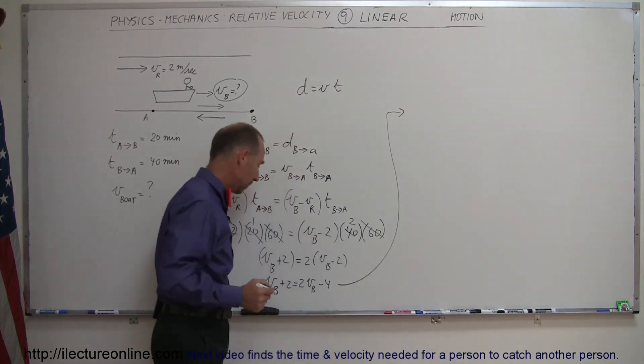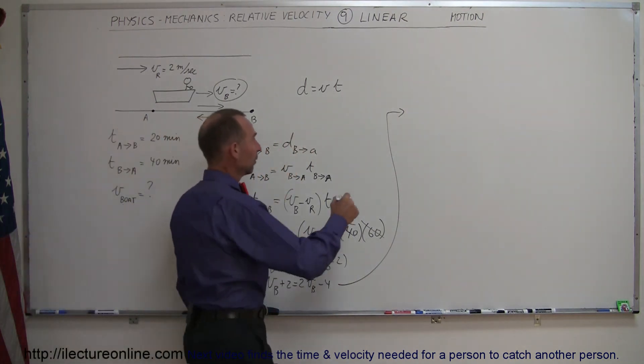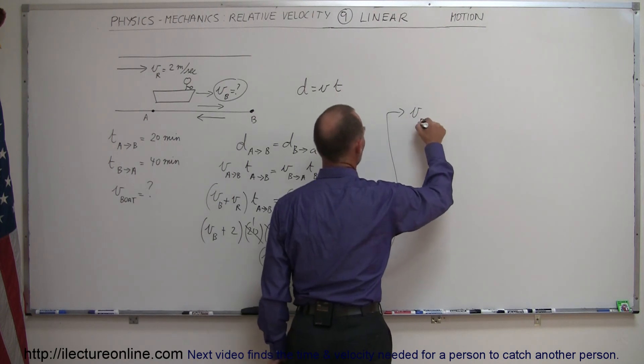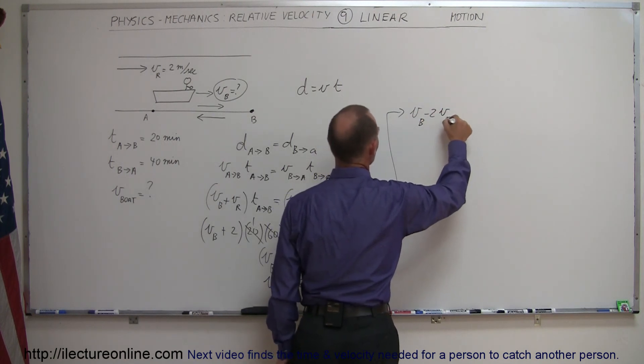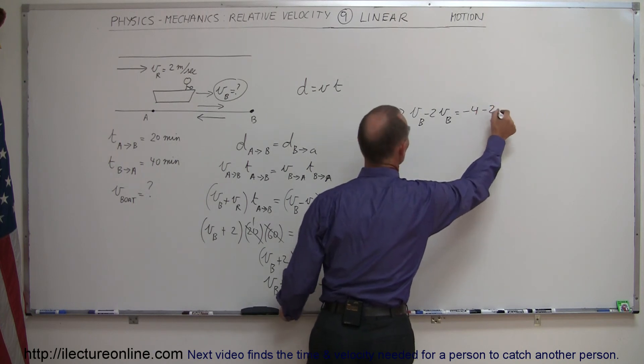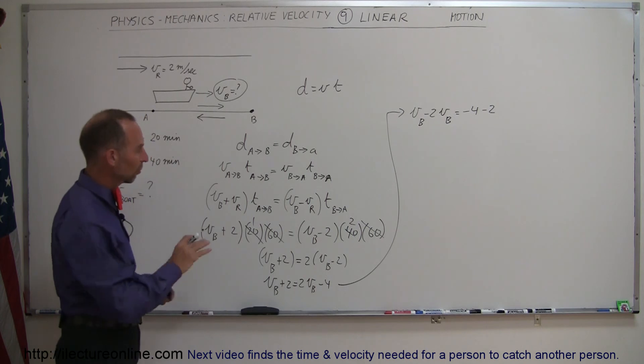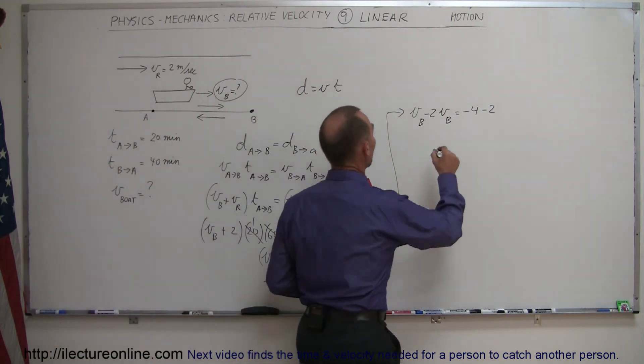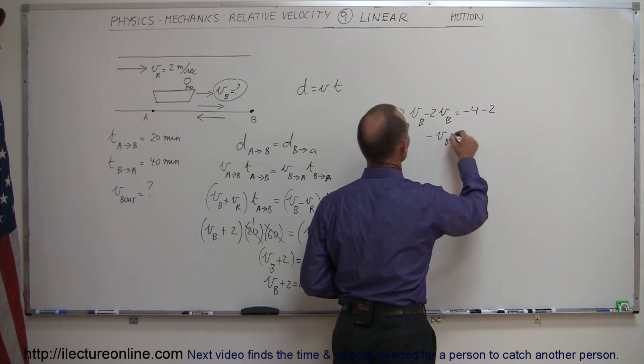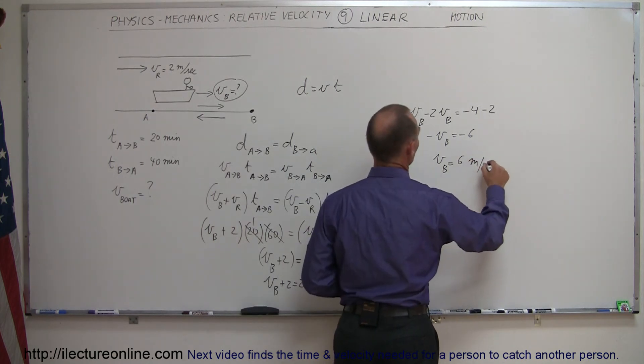Coming up here to finish the problem, I'm going to move all the V sub B's to the left, all the numbers to the right. So we have V sub B minus 2 times V sub B is equal to minus 4, and that would be minus 2, right. So I move the 2V sub B to the left becomes minus, move the 2 to the right becomes minus as well. Combine like terms. So we have minus V sub B is equal to minus 6, or V sub B is equal to 6, and the units of course would be meters per second.